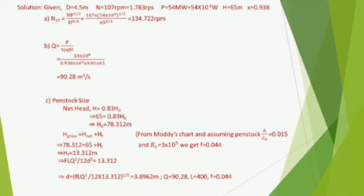For part (b), to find Q we use η = P / (ρ g Q H). Cross-multiplying and substituting the values, Q = 90.28 m³/s.